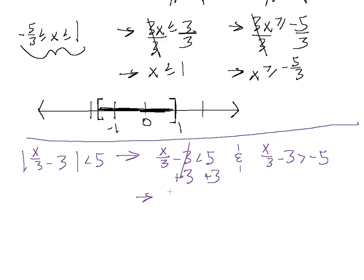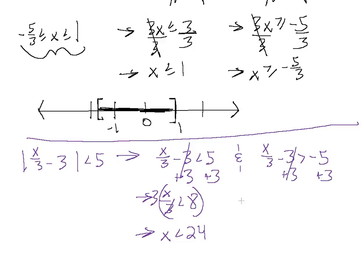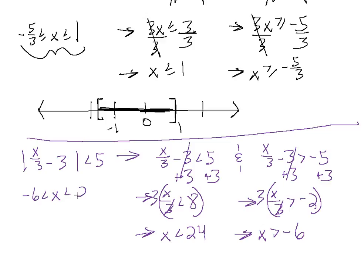Let's add 3 to both sides: x over 3 is less than 8. We can isolate our variable by multiplying both sides by 3, which cancels the denominator, giving us x is less than 24. For the other inequality, adding 3 to both sides gives x over 3 greater than minus 2. Multiplying both sides by 3, we get x is greater than minus 6. So in inequality notation, all values of x are in between minus 6 and 24.